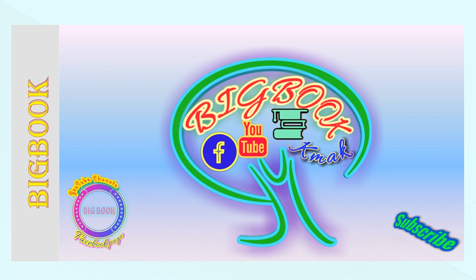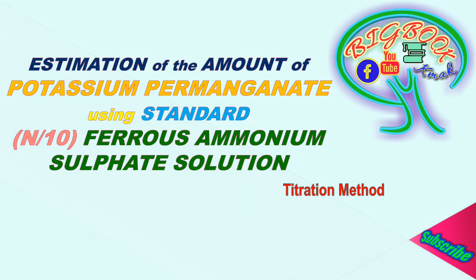Hello guys, welcome to Big Book. Today we are going to discuss a new lab practical of titration method, that is estimation of the amount of potassium permanganate using standard ferrous ammonium sulphate solution, which will have a normality of 0.1, that is N/10. We also request you to subscribe to our YouTube channel Big Book and help us to grow.